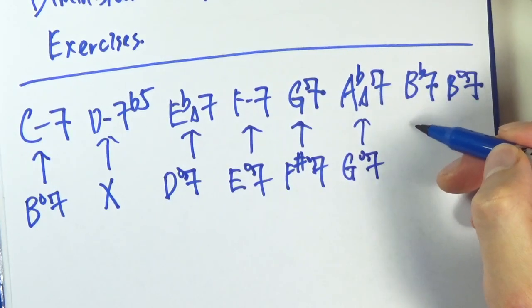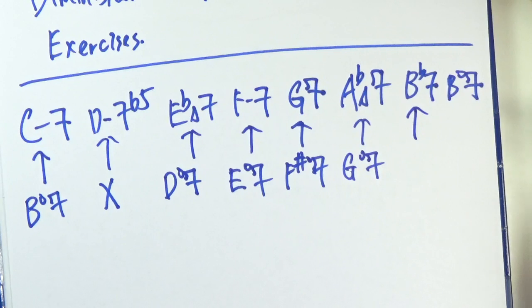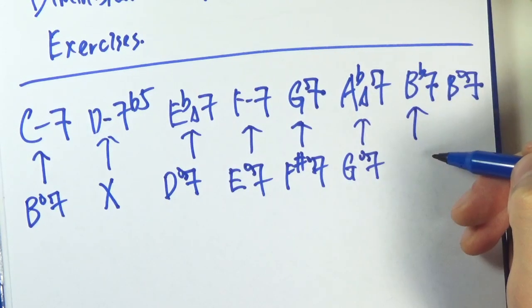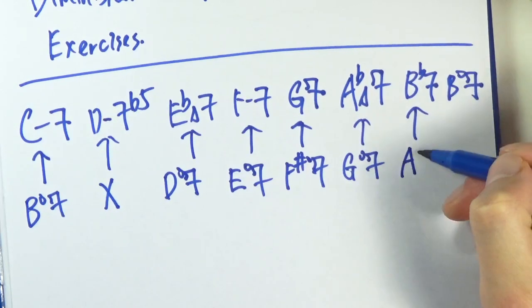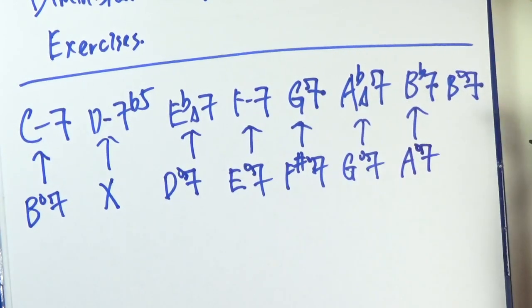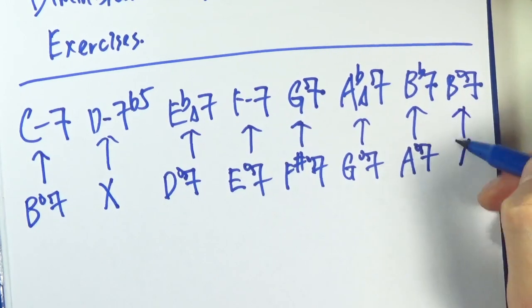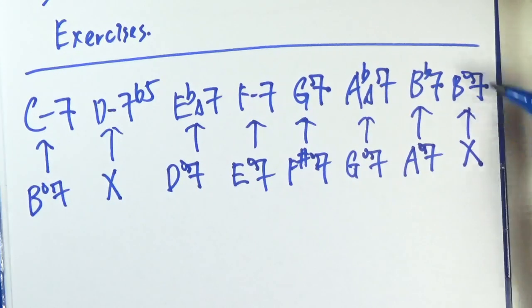Bb, let's see, Bb, that should be an A diminished 7, and no chord for the 7 diminished 7.